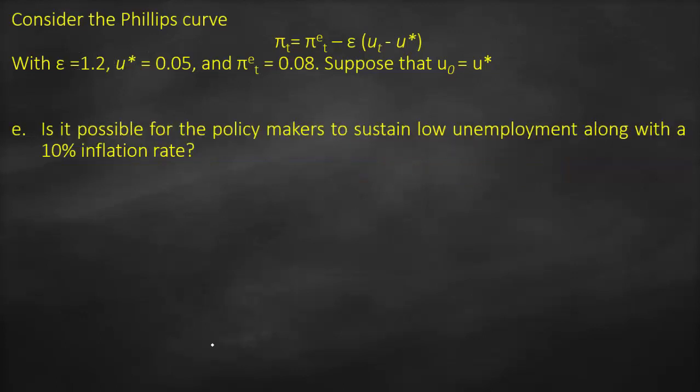The final part asks: is it possible for policy makers to sustain low unemployment along with a 10% inflation rate? The answer is definitely not, because as explained, maintaining a low unemployment rate causes the inflation rate to keep increasing from 10% to 12% to 14% and beyond. We cannot maintain unemployment at 3.33% while holding inflation at 10%.